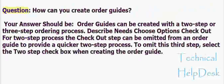Question: How can you create order guides? Order guides can be created with a two-step or three-step ordering process. The steps are: describe needs, choose options, and check out for the three-step process. The checkout step can be omitted from an order guide to provide a quicker two-step process.